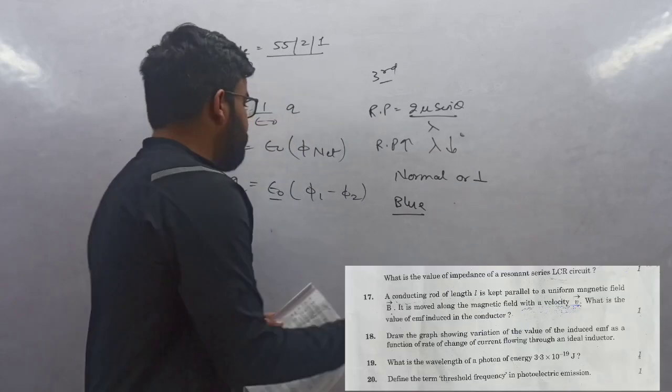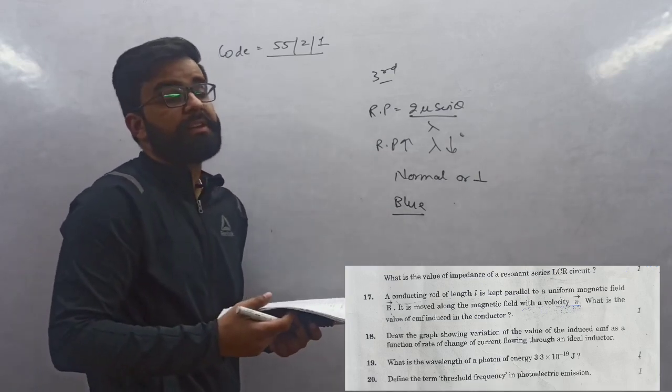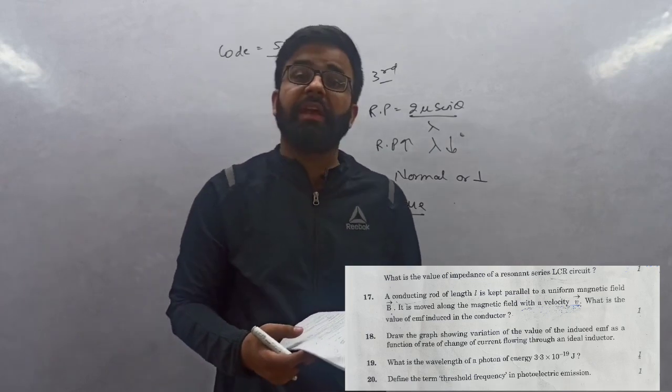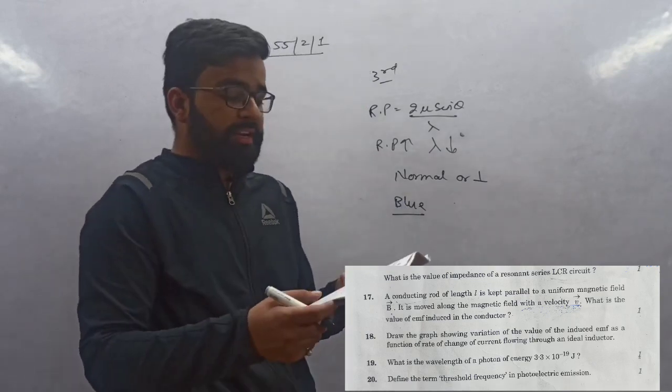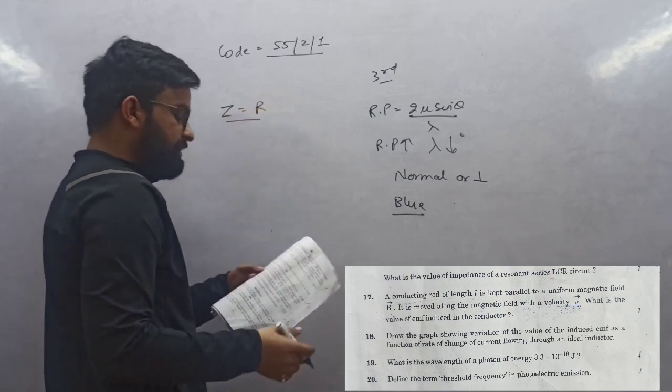Question 16: The impedance of resonance series LCR circuit. Series LCR circuit is said to be in resonance when XL equals XC. And when XL equals XC, then Z equals R.